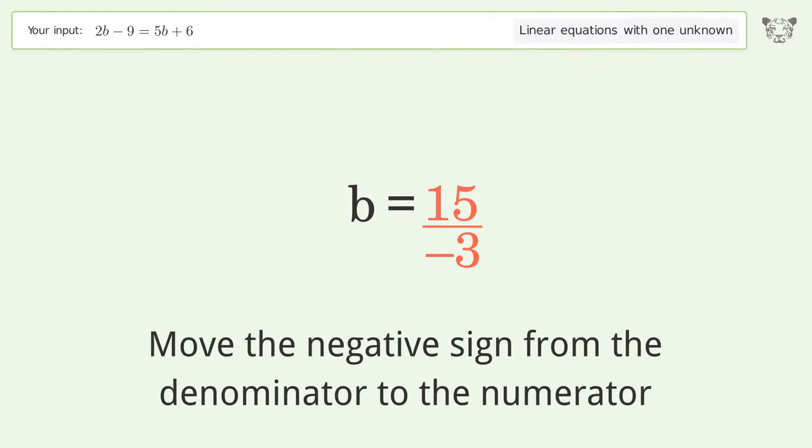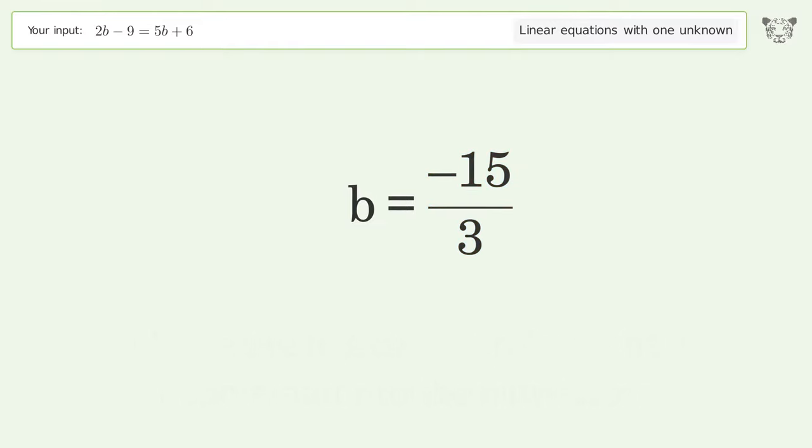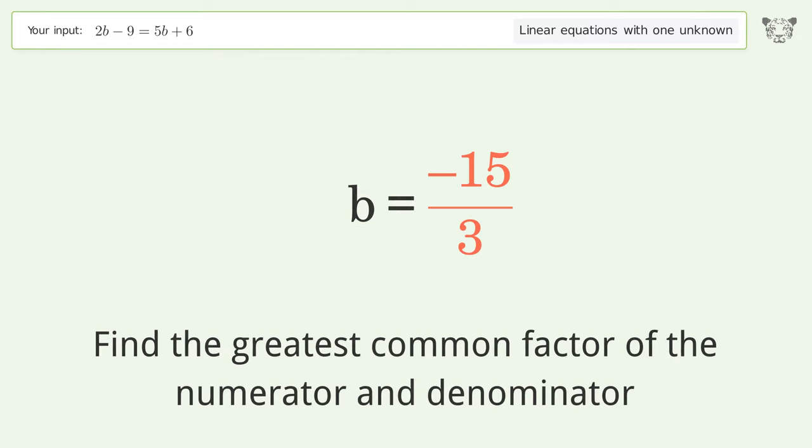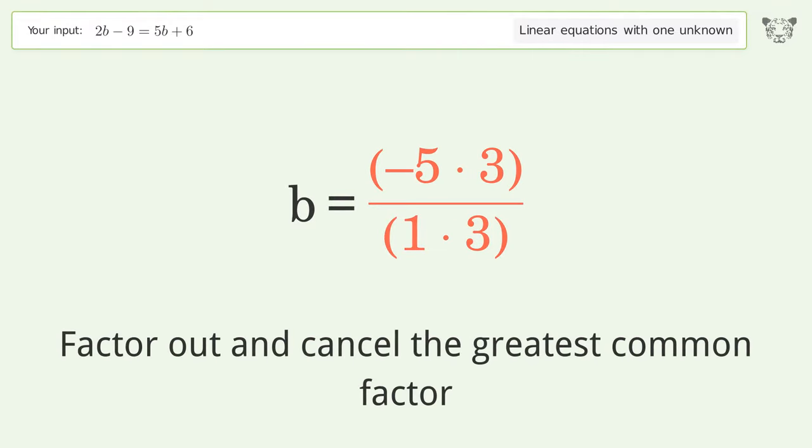Move the negative sign from the denominator to the numerator. Find the greatest common factor of the numerator and denominator. Factor out and cancel the greatest common factor.